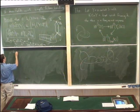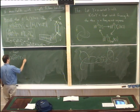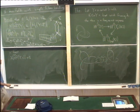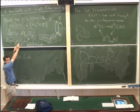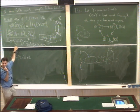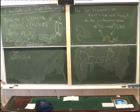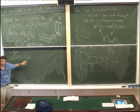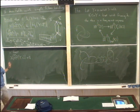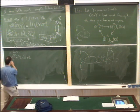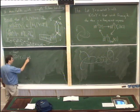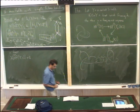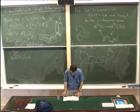The Euler characteristic of HF hat in spin-C structure S is always equal to 1. Strictly speaking, I should write plus or minus 1 since I've only defined a relative Z mod 2 grading. But we can declare it to be plus 1 — that defines an absolute Z mod 2 grading on HF hat of Y.